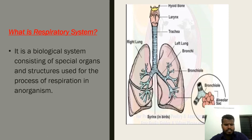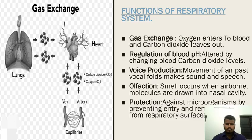What is the respiratory system? It is a biological system consisting of special organs and tissues used for the process of respiration in an organism. Functions of the respiratory system include gas exchange — oxygen intake into the blood and carbon dioxide removal — and regulation of blood pH, altered by changing blood carbon dioxide levels.